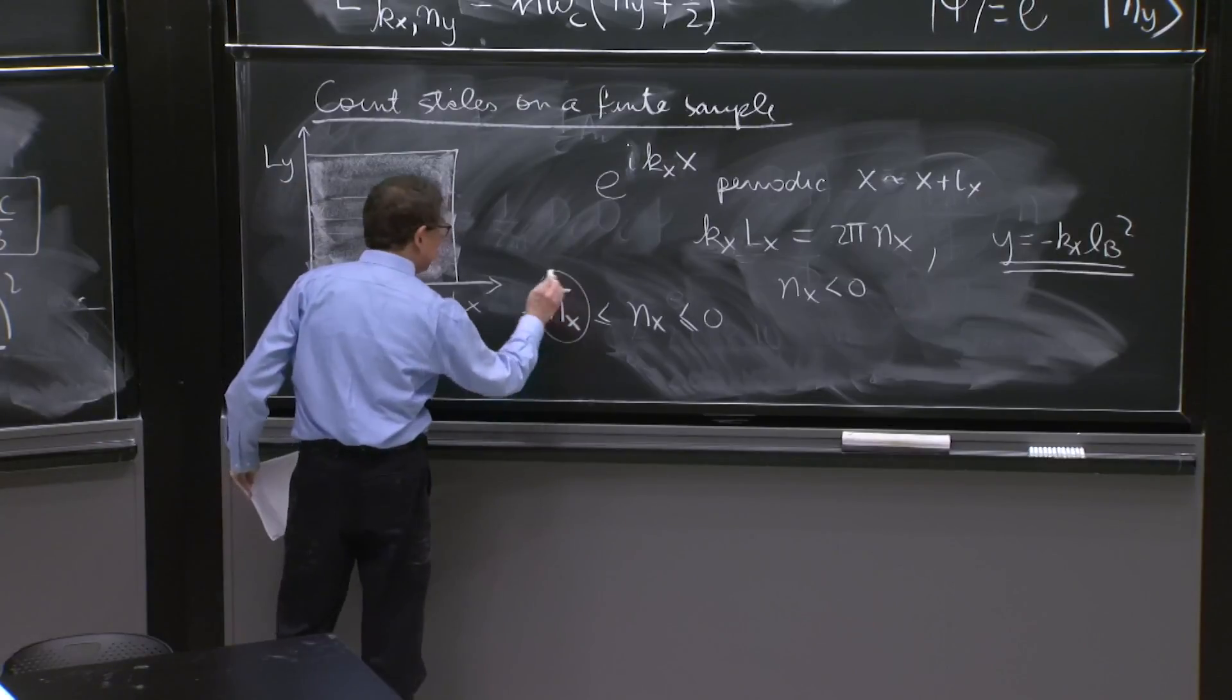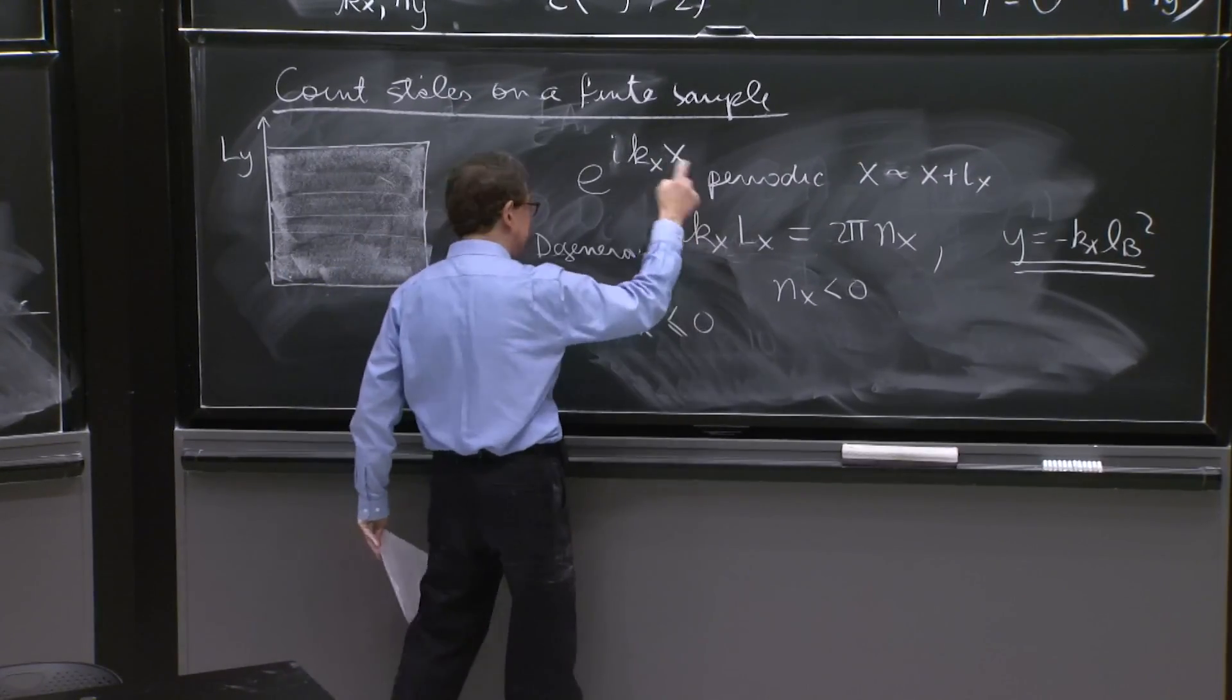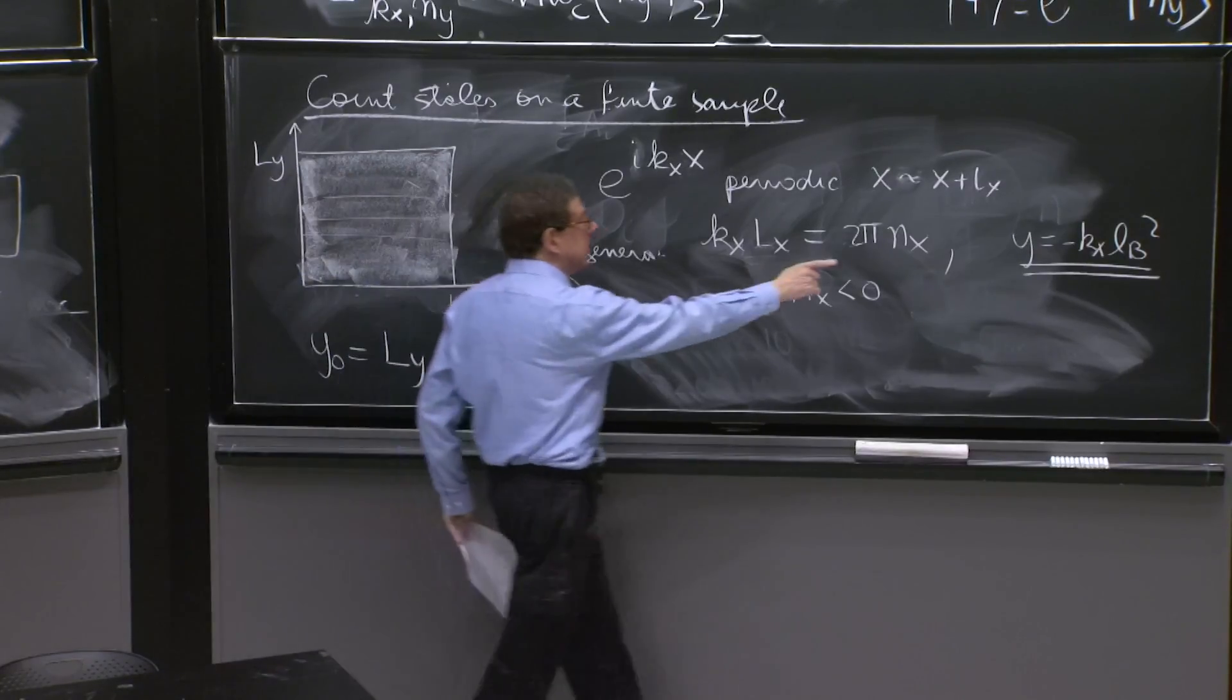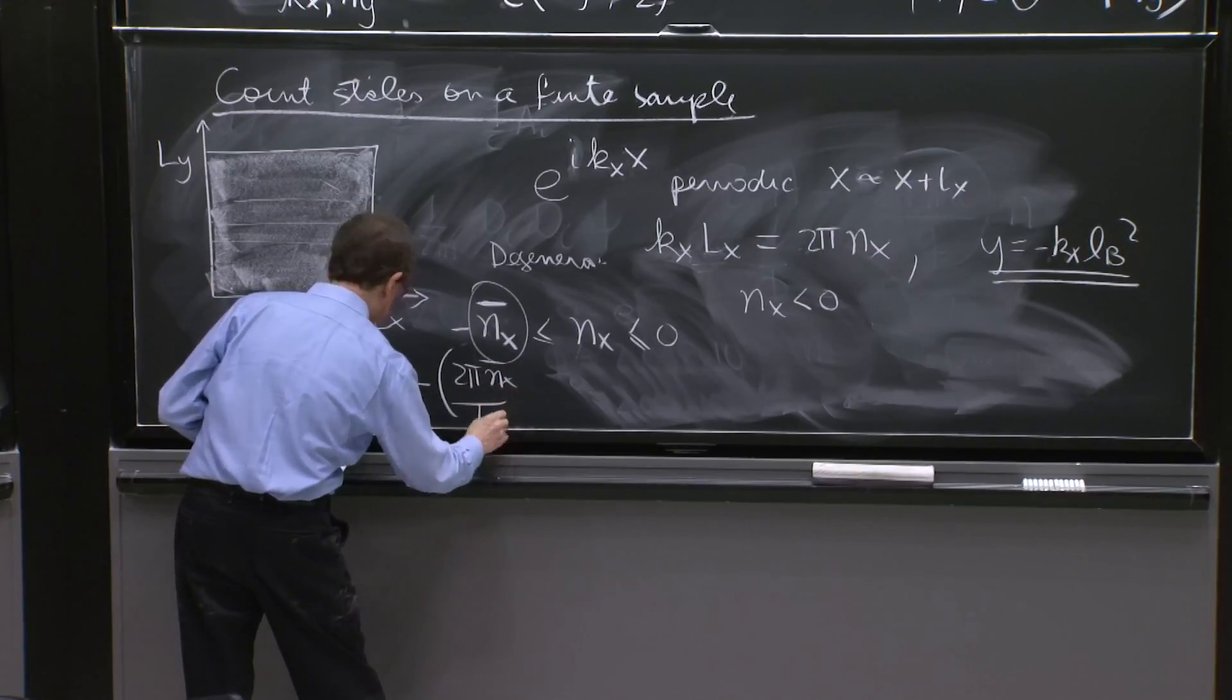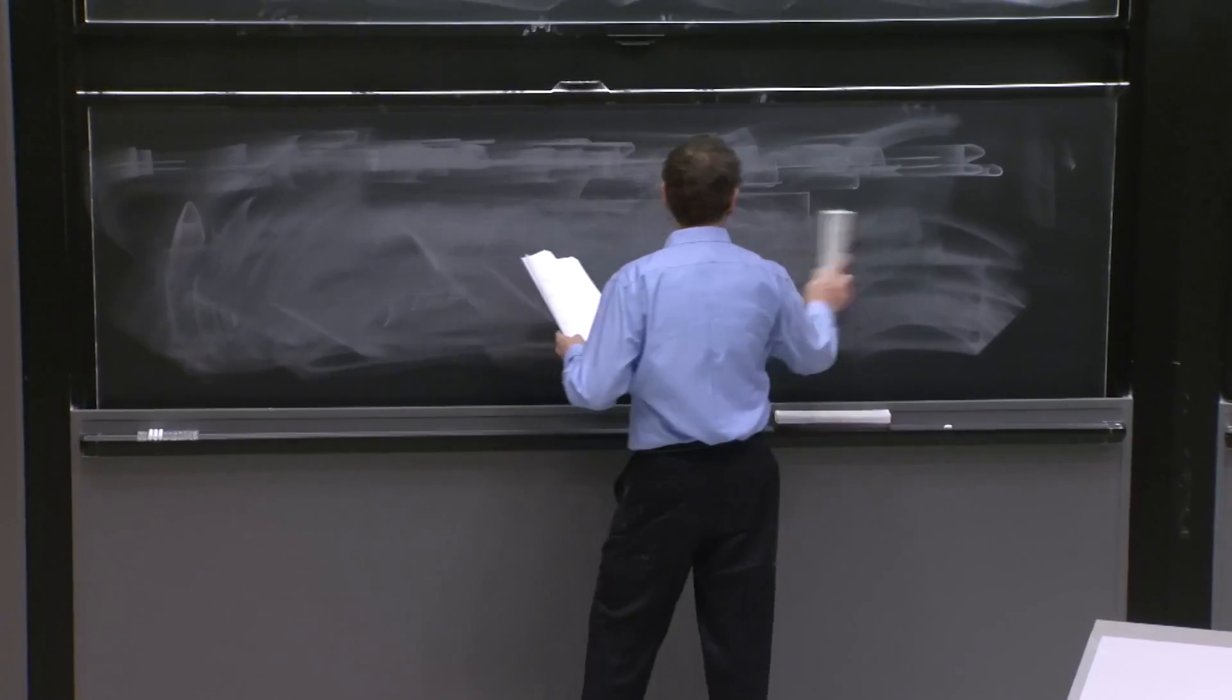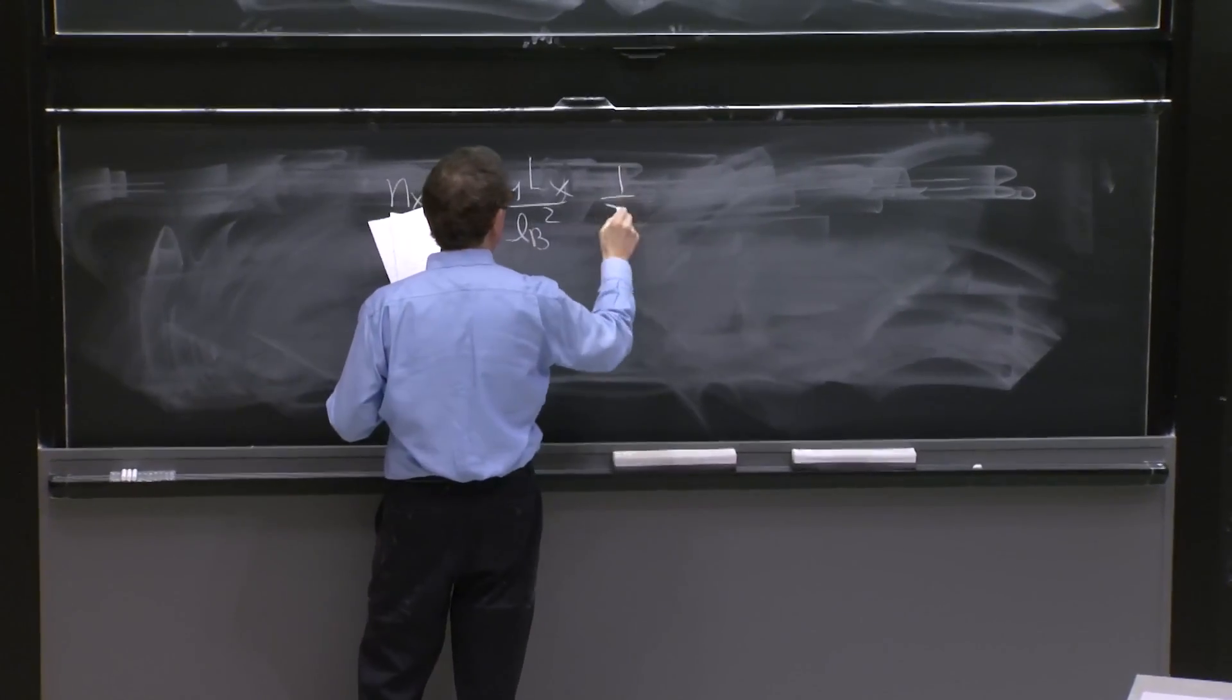So this number is really the degeneracy. Because this is how many values of n_x I can have. From minus n_x up to 0 are the number of values that are consistent with a state still in the sample. So y_naught equal to L_y should be equal to minus k_x times L_b^2. So it's minus 2π*n_x bar over L_x times L_b^2. And this gives you n_x. We can solve for n_x there.